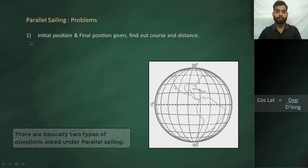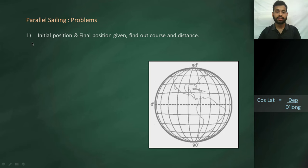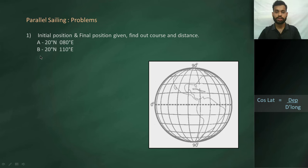The first type of question asked in parallel sailing is that the initial position and final position are given and we need to find the course and the distance between these positions. Let us take a question: the initial position is 20° North, 80° East, and the final position is 20° North, 110° East. We need to find the course and the distance.